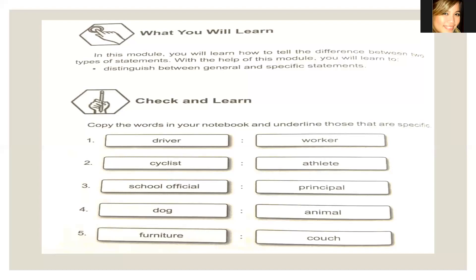Very good for those who got the answer correct. For those who didn't, you still have a chance to change them. Number three — we have school official and principal. Number four — we have dog and animal. And number five — furniture and couch. When we say couch, that is like the sofa we have in our living room. I'm excited to check these as your parents will pass them next week.